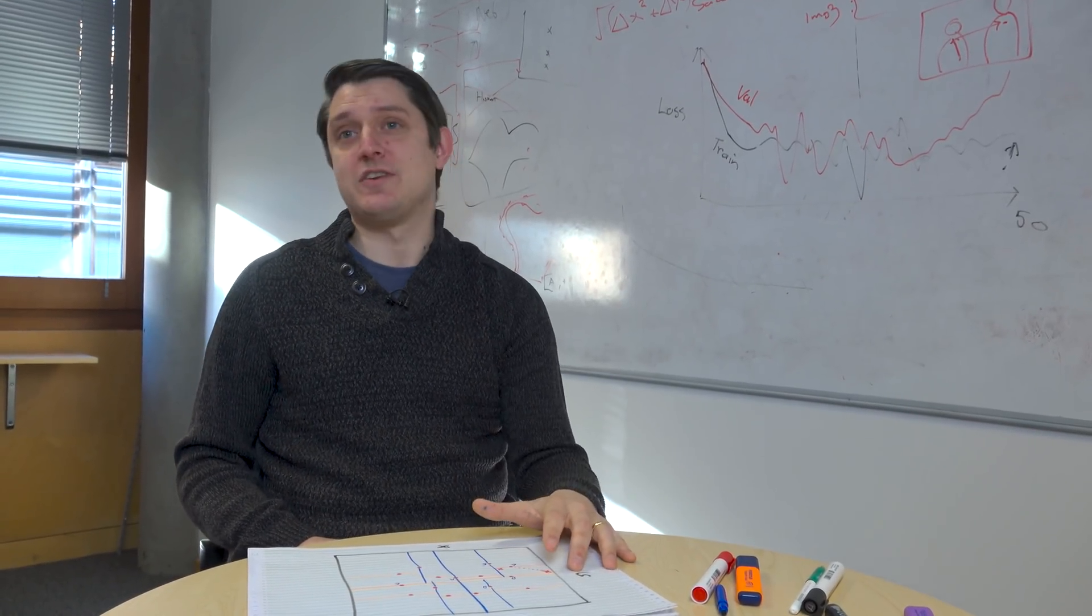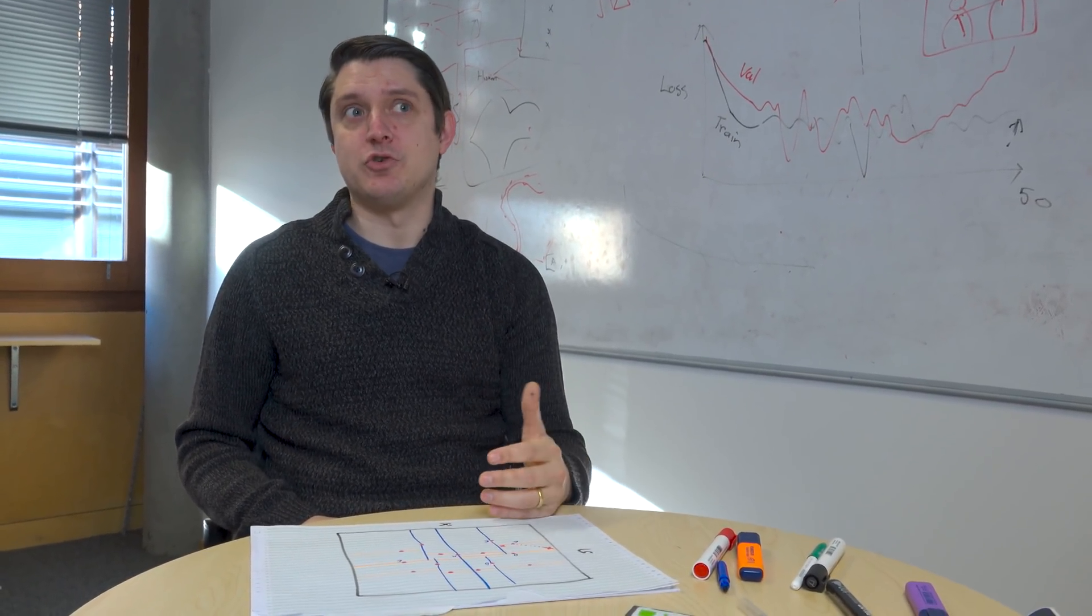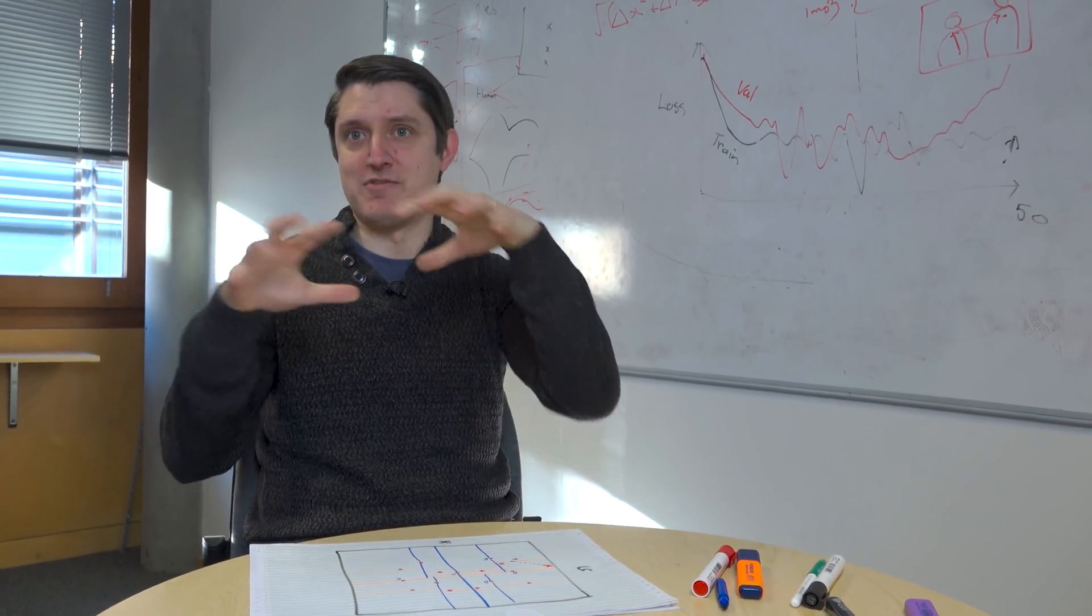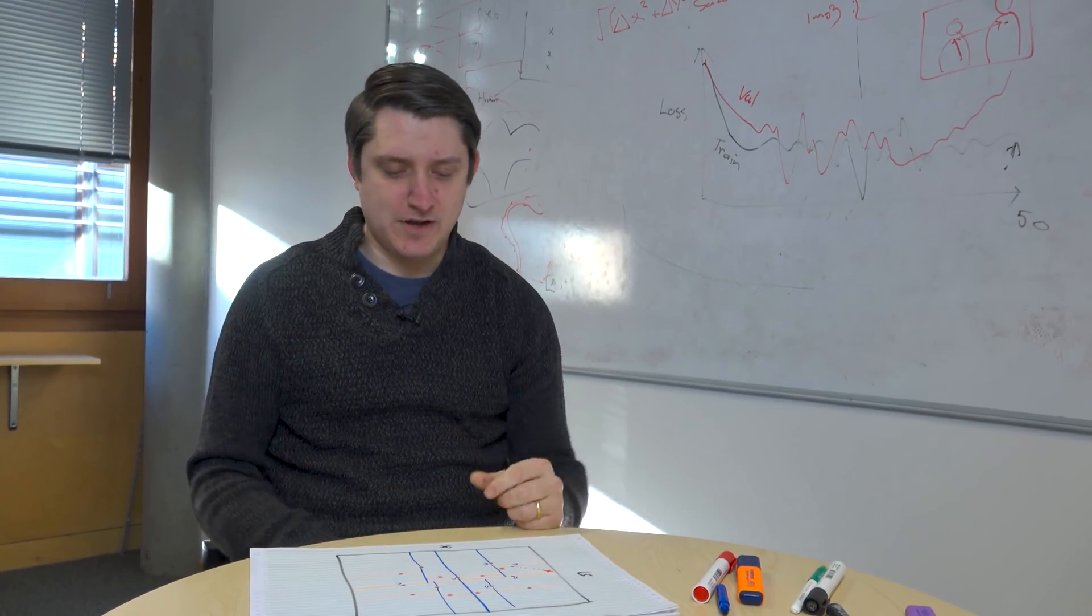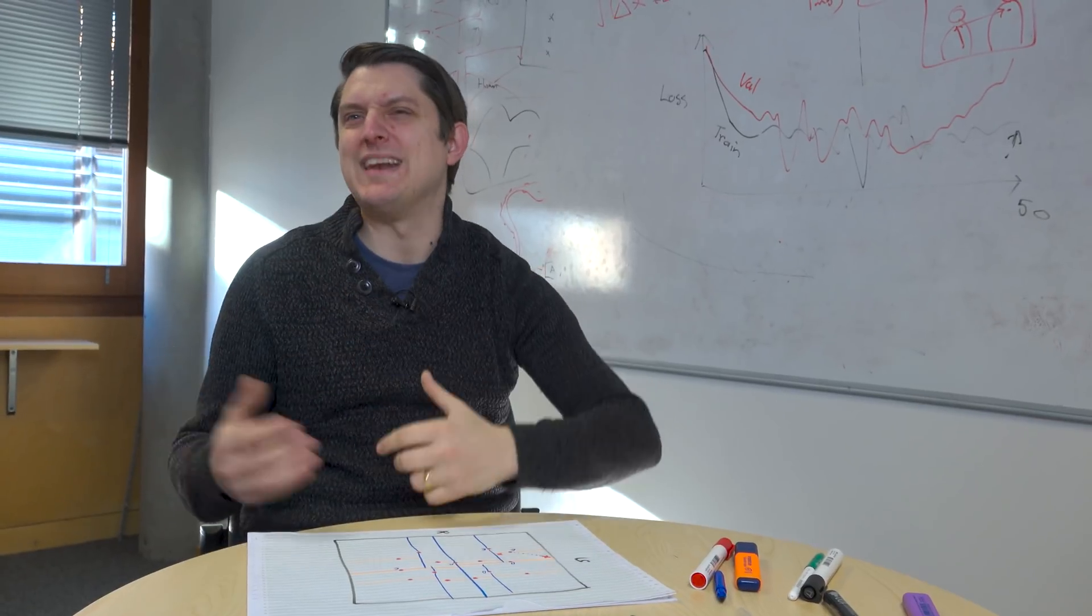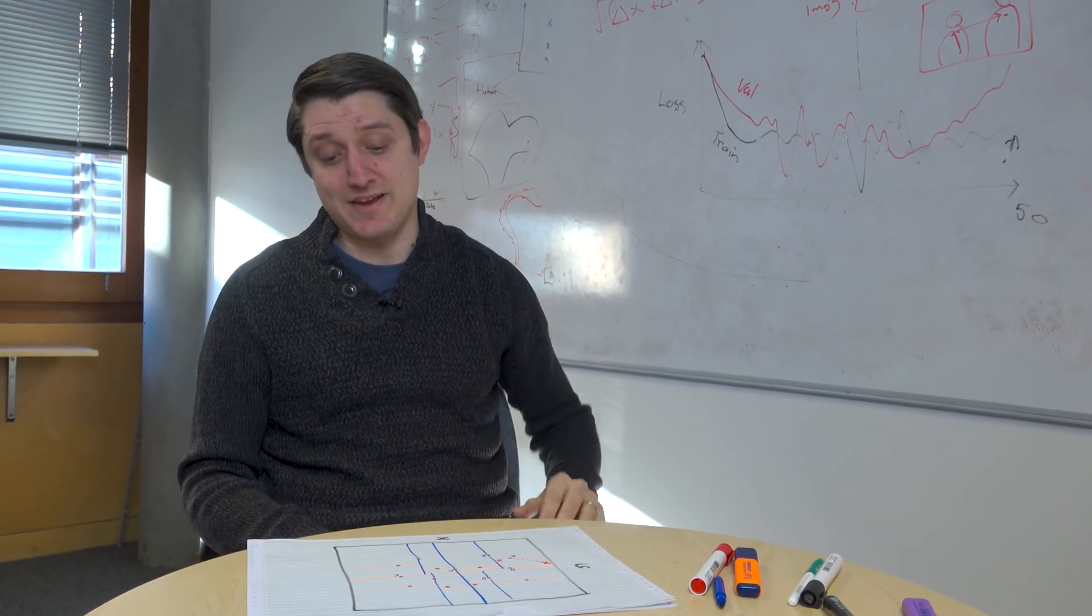This works well when you're doing things like iterative closest point because you're taking two static sets of points and just sort of moving them around using, you know, matrix multiplications. But you're not adding more points or taking more points away, at least not very often. So, it does make things a lot easier.